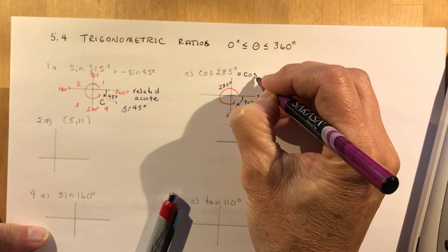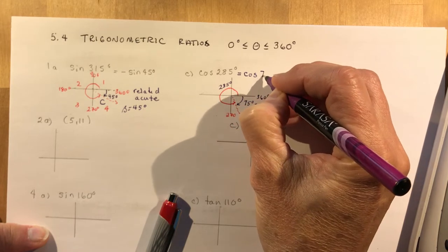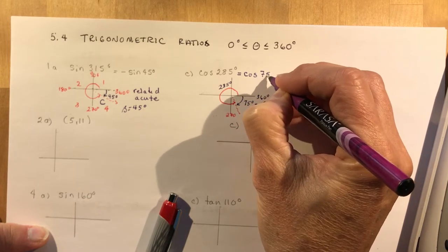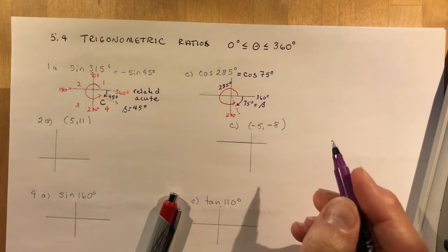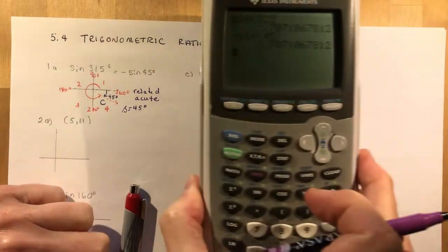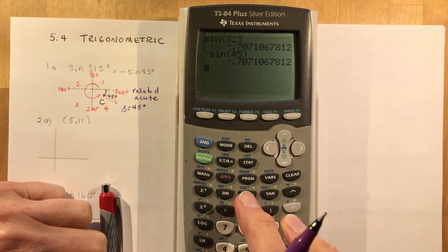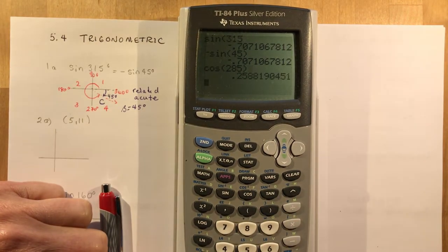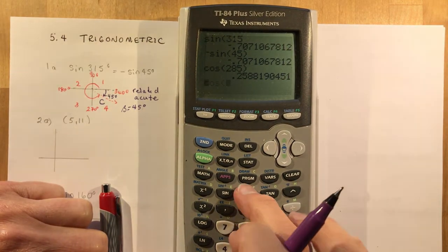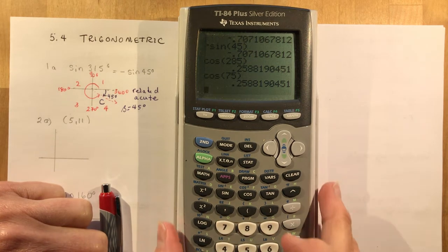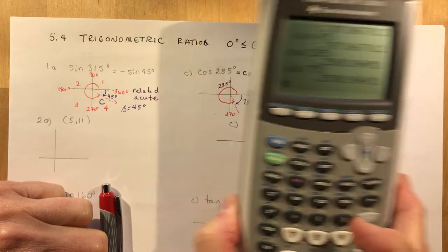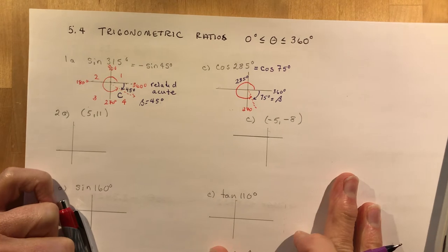We're doing the cosine — I have to focus here. You could check: what's the cos of 285 degrees? Is that the same as the cos of 75 degrees? Sure it is.